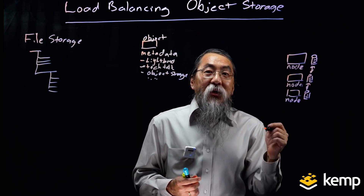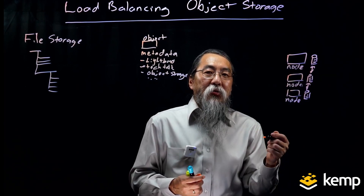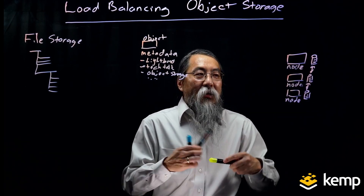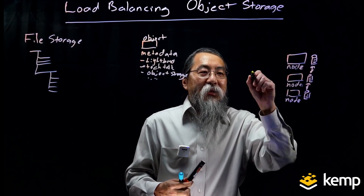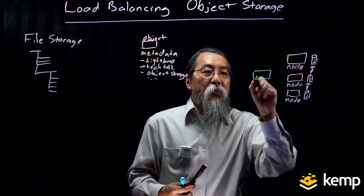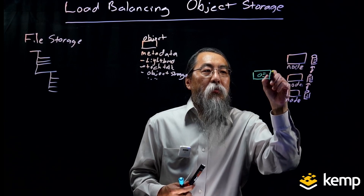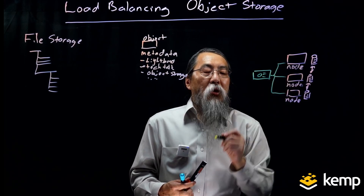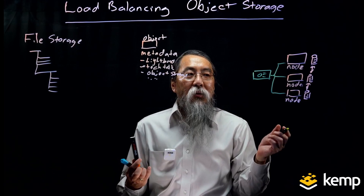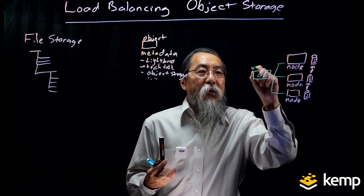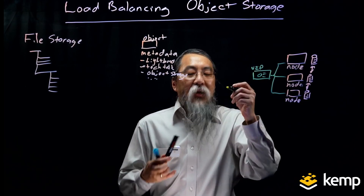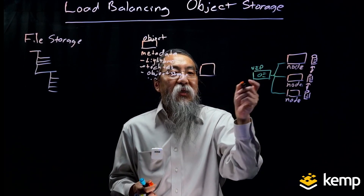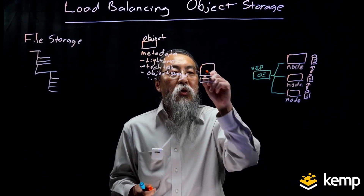They're essentially redundant in terms of the functionality that they host. So this sounds a lot like a standard application server pool. I'm going to take my load balancer and load balance those nodes. I'm going to have a virtual IP address or a virtual service, and my clients are going to access these nodes through the load balancer.